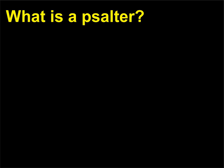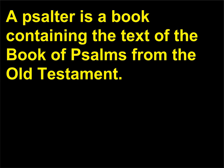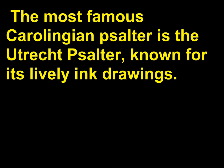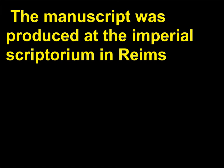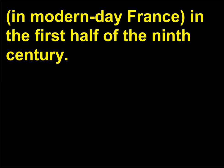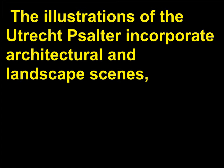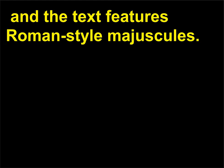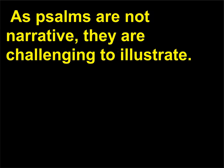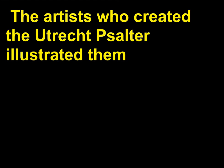What is a Psalter? A Psalter is a book containing the text of the Book of Psalms from the Old Testament. The most famous Carolingian Psalter is the Utrecht Psalter, known for its lively ink drawings. The manuscript was produced at the Imperial Scriptorium in Reims, in modern-day France, in the first half of the 9th century. The illustrations of the Utrecht Psalter incorporate architectural and landscape scenes, and the text features Roman-style majuscules. As Psalms are not narrative, they are challenging to illustrate; the artists illustrated them by expressively visualizing specific phrases from the text.